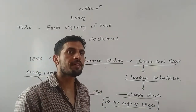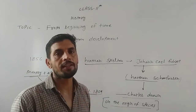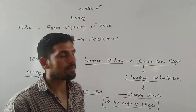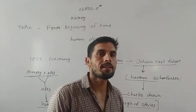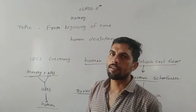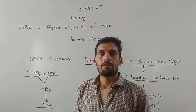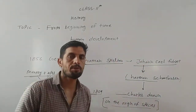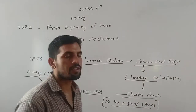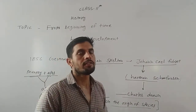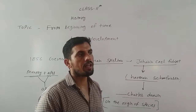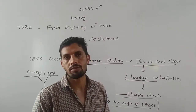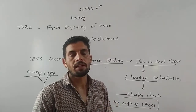We discussed in the first video the types of history, in which we discussed ancient, modern, and medieval age. In today's class we will talk about the next topic — what kind of development has happened from the beginning. We have studied the types of history and divided it into 3 parts. We also studied the source of human development in the previous class.